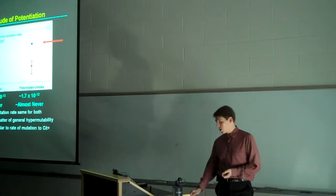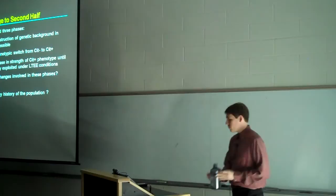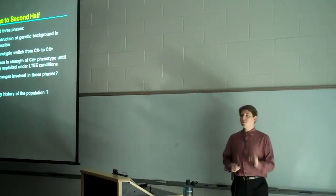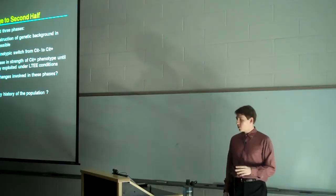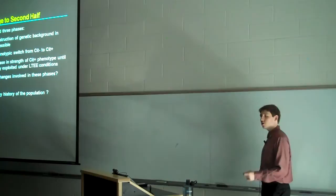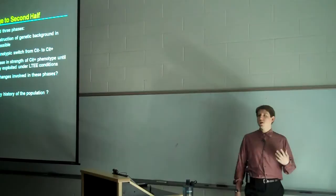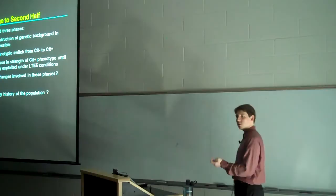Shifting gears and summing up so far, Cit plus evolution appears to have involved three distinct phases. The first was potentiation, during which a genetic background was constructed in which Cit plus was mutationally accessible, followed by actualization, in which the phenotypic switch from Cit minus to Cit plus took place, and then a process of refinement, whereby there was an accumulation of mutations that improved the capacity of Cit plus variants to use the citrate resource under the conditions of the experiment. So what are the genetic changes involved in these phases? How do they work? What's the genetic history of the population?